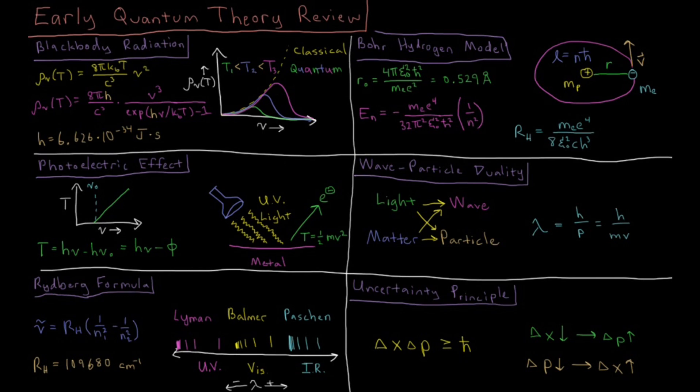This video is an overview of early quantum theory and several experiments before the Schrodinger equation and the rest of quantum theory, which really demonstrated the need for this type of quantization hypothesis to fix some failures of classical mechanics.